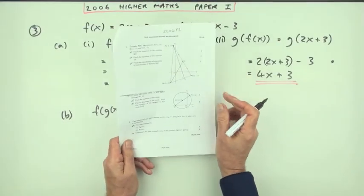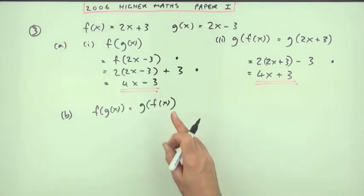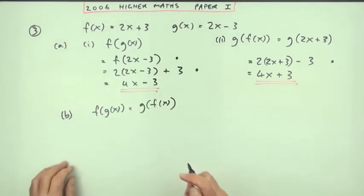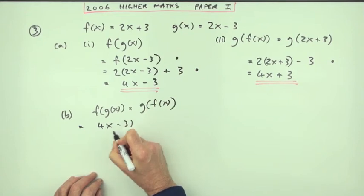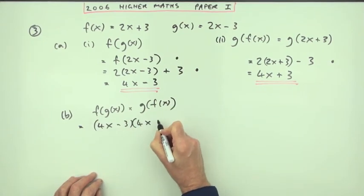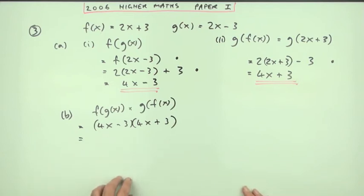Now part b says, what's the least possible value of the product of those two results? Ah, well here's where our tidying up is going to pay off. Multiplying the two together means I've got (4x - 3) times (4x + 3), which you could multiply out if you like tediously—the 4x times both of them and then negative three times both of them.